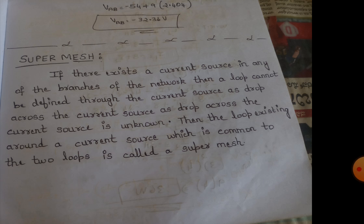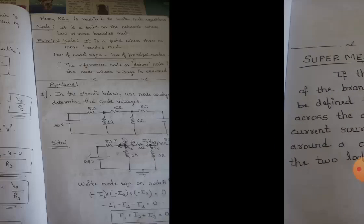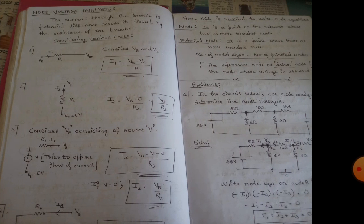When there is a current source between two meshes, that current source acts as a super mesh. The two meshes together form a single mesh, and that acts as a super mesh. That's all about the concept of super mesh.